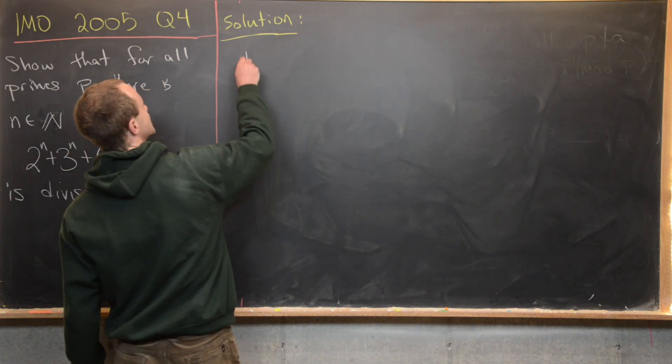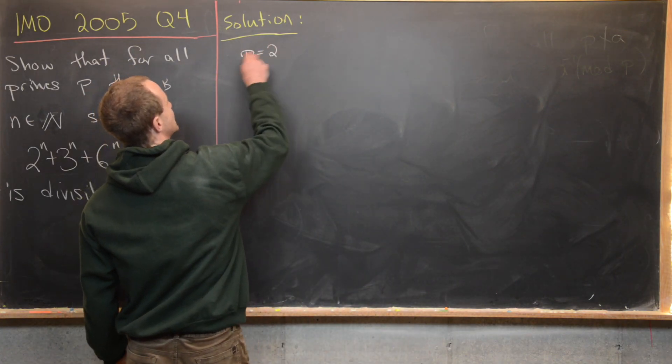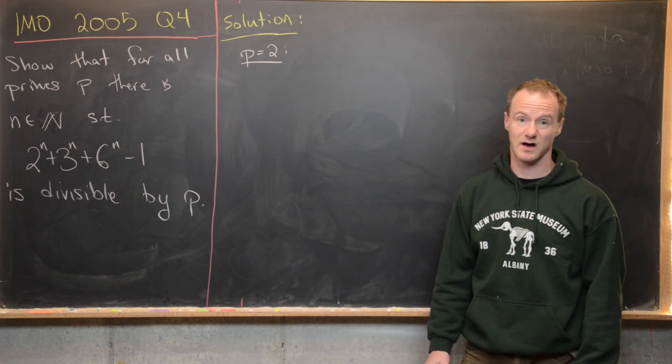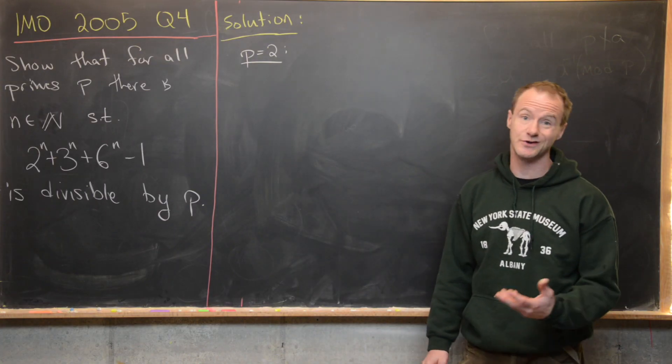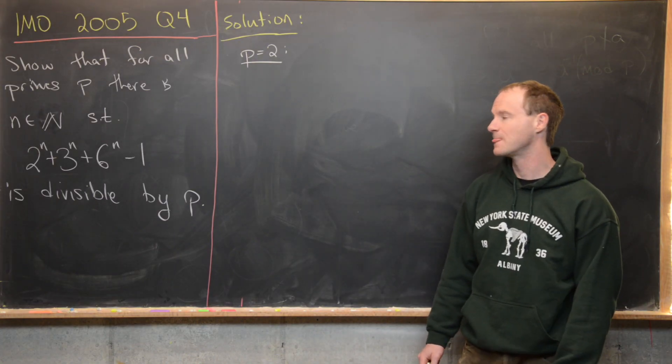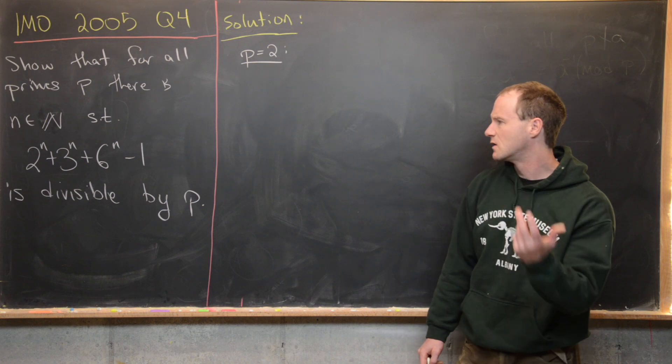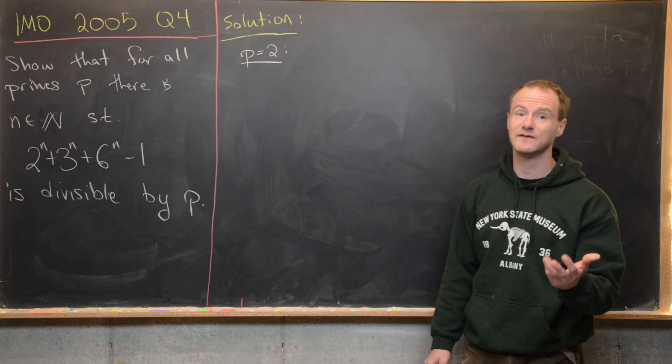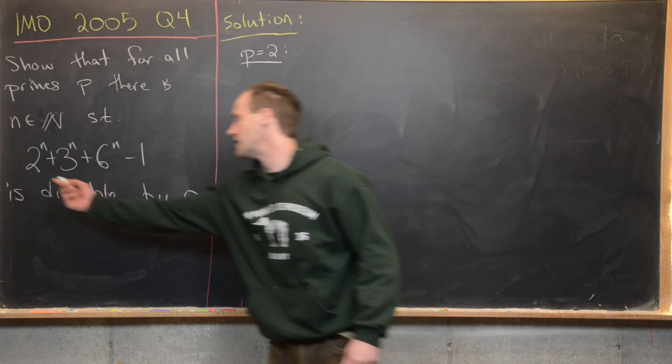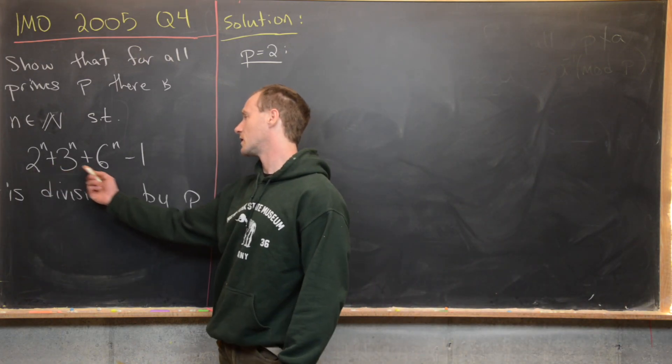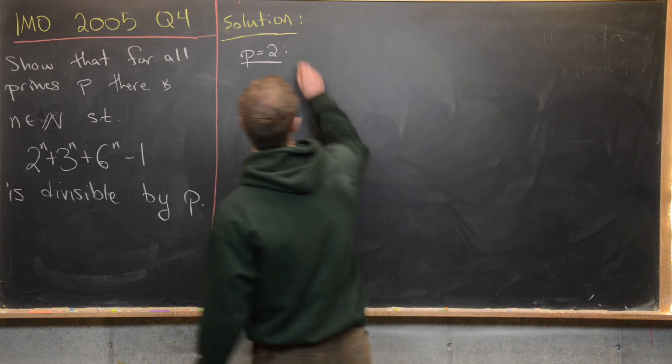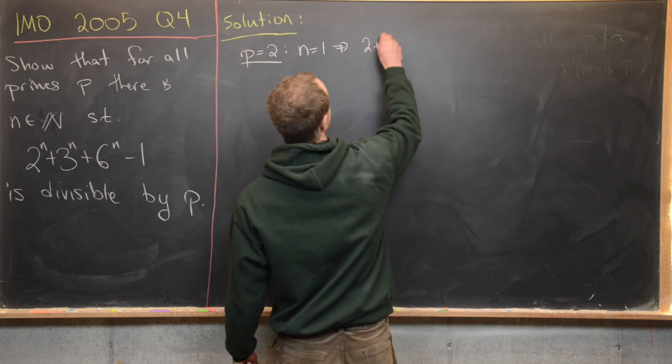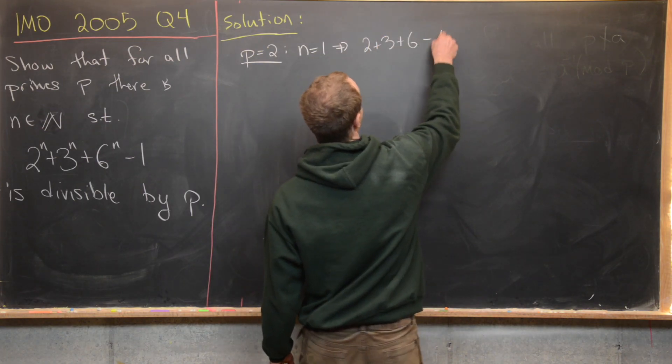Let's look at the case when the prime is equal to 2, because we want to show that this kind of thing is possible for any prime. Well, that means that this should be a multiple of 2 if we choose n carefully. A bunch of choices for n will work—in fact, I believe that any choice for n will work because you'll have an even number, an even number, an odd number minus one. So for instance, if we set n equal to 1, we will have 2 + 3 + 6 - 1.